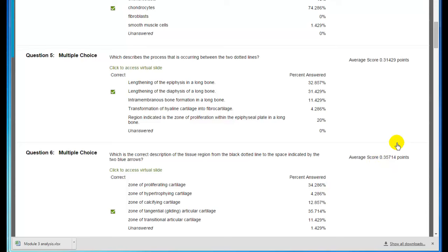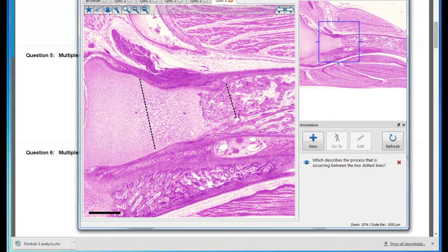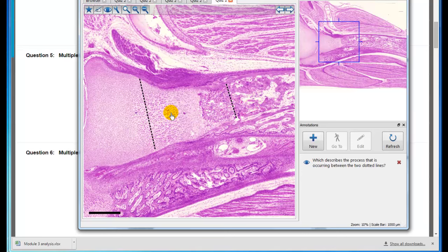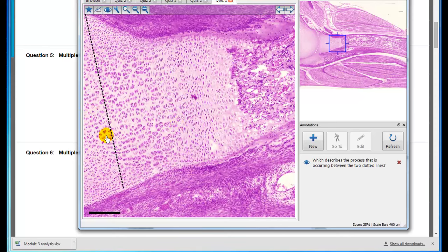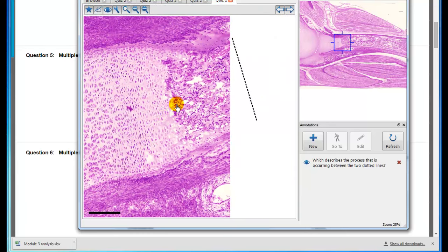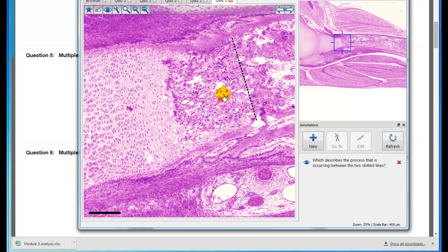Question number five asks what process is occurring between the two dotted lines? This was a specimen of long bone. Between the lines was the epiphyseal plate, and the only possible correct answer would be lengthening of the diaphysis. Here are the two dotted lines, and between is the epiphyseal plate. If you enlarge this, you can see here's the zone of reserve cartilage, the zone of proliferation, the zone of enlargement of the cartilage, and then the zone of calcification of the cartilage and bone deposition.